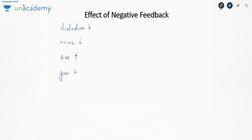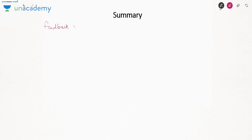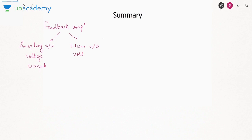To summarize the effects of negative feedback: all types of distortion decrease, noise decreases, and bandwidth increases — while the gain also reduces. That is why we use negative feedback. In summary of this video: we covered the basics of the feedback amplifier, why we use it, its block diagram, the two important components — sampling network and mixer network — each with two possibilities (voltage and current), giving four possible combinations, each corresponding to one type of amplifier. The closed-loop gain for negative feedback is A/(1+Aβ).